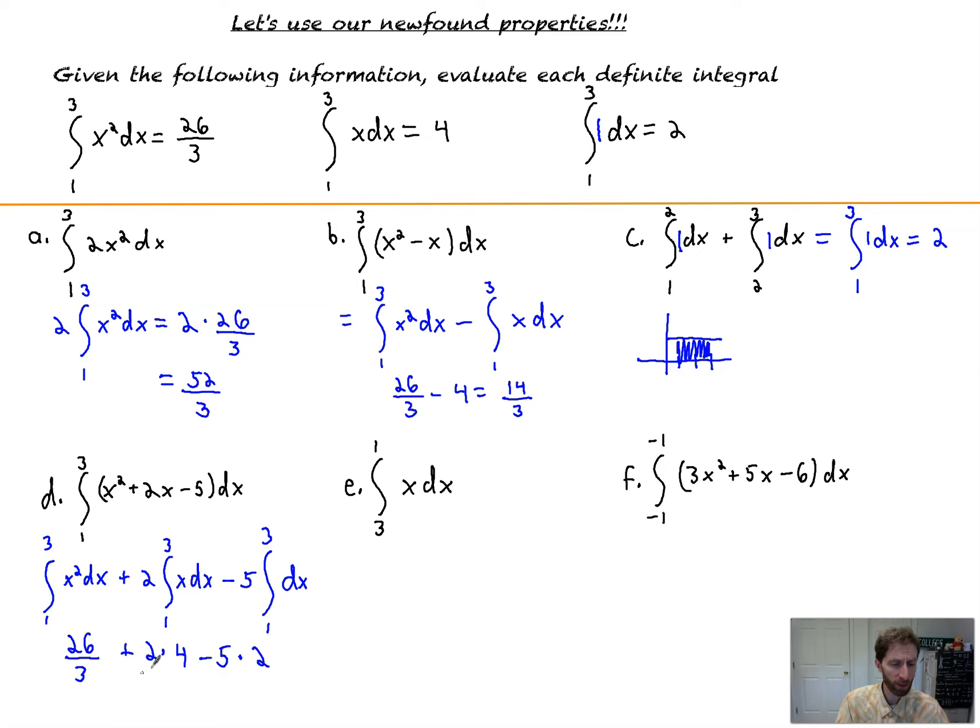So 26 thirds plus 8 is what that's going to amount to. 26 thirds plus 8 minus 10. This will be negative 2 plus 26 thirds. That'll end up being 20 over 3 when all the dust settles. Not bad. Not bad at all.